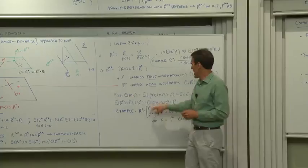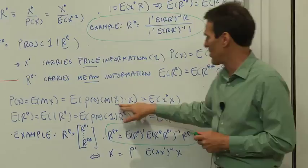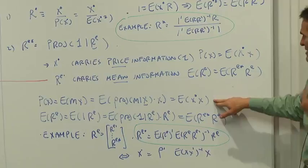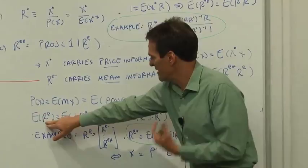For example, the price of x is e of x star x. And we can always project the discount factor on the payoff space and get the same pricing because the residual is uncorrelated with x. And the projector of a discount factor on the payoff space is x star. So that's how the price of x is e of x star x. x star is a payoff that generates prices.